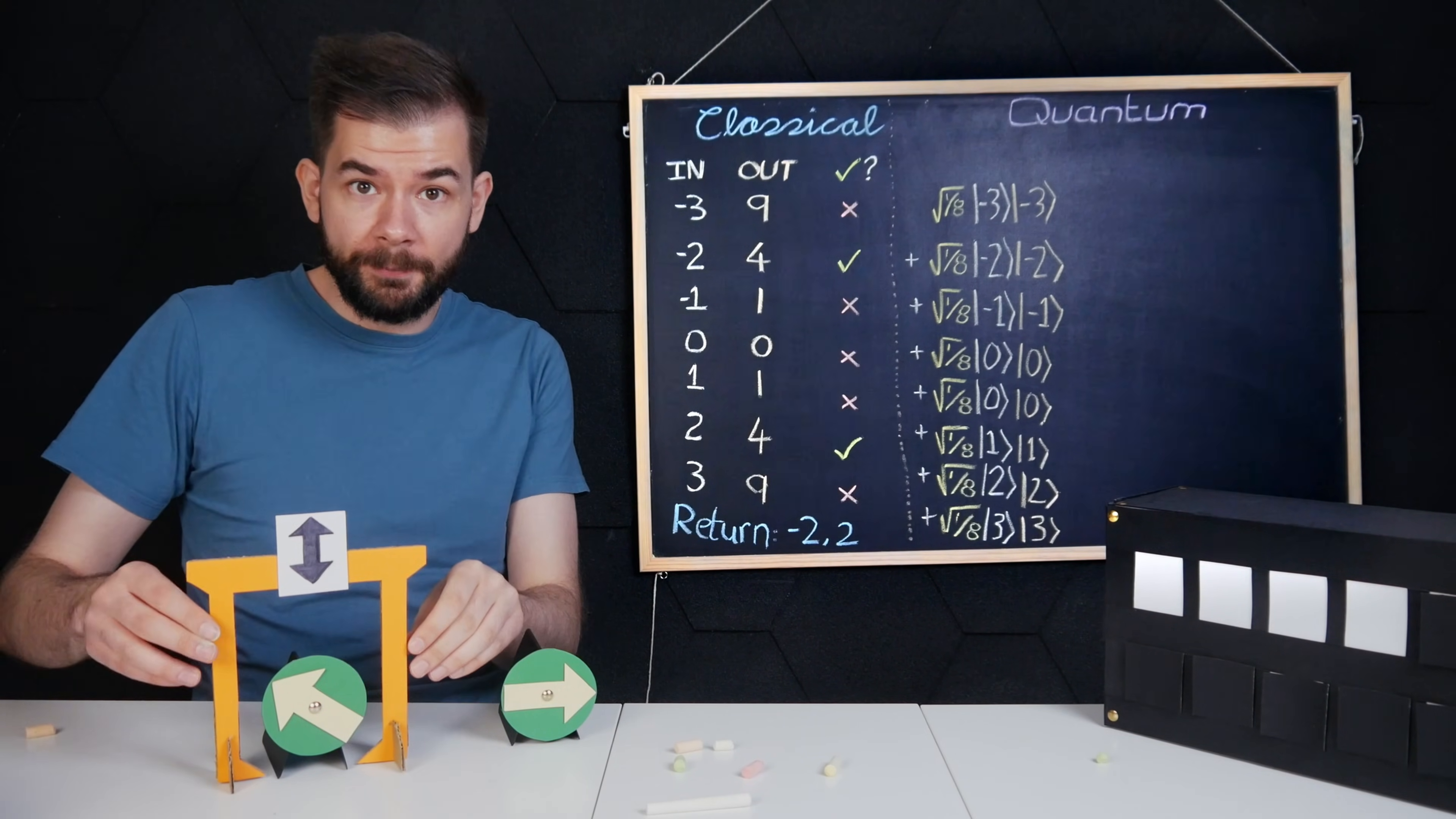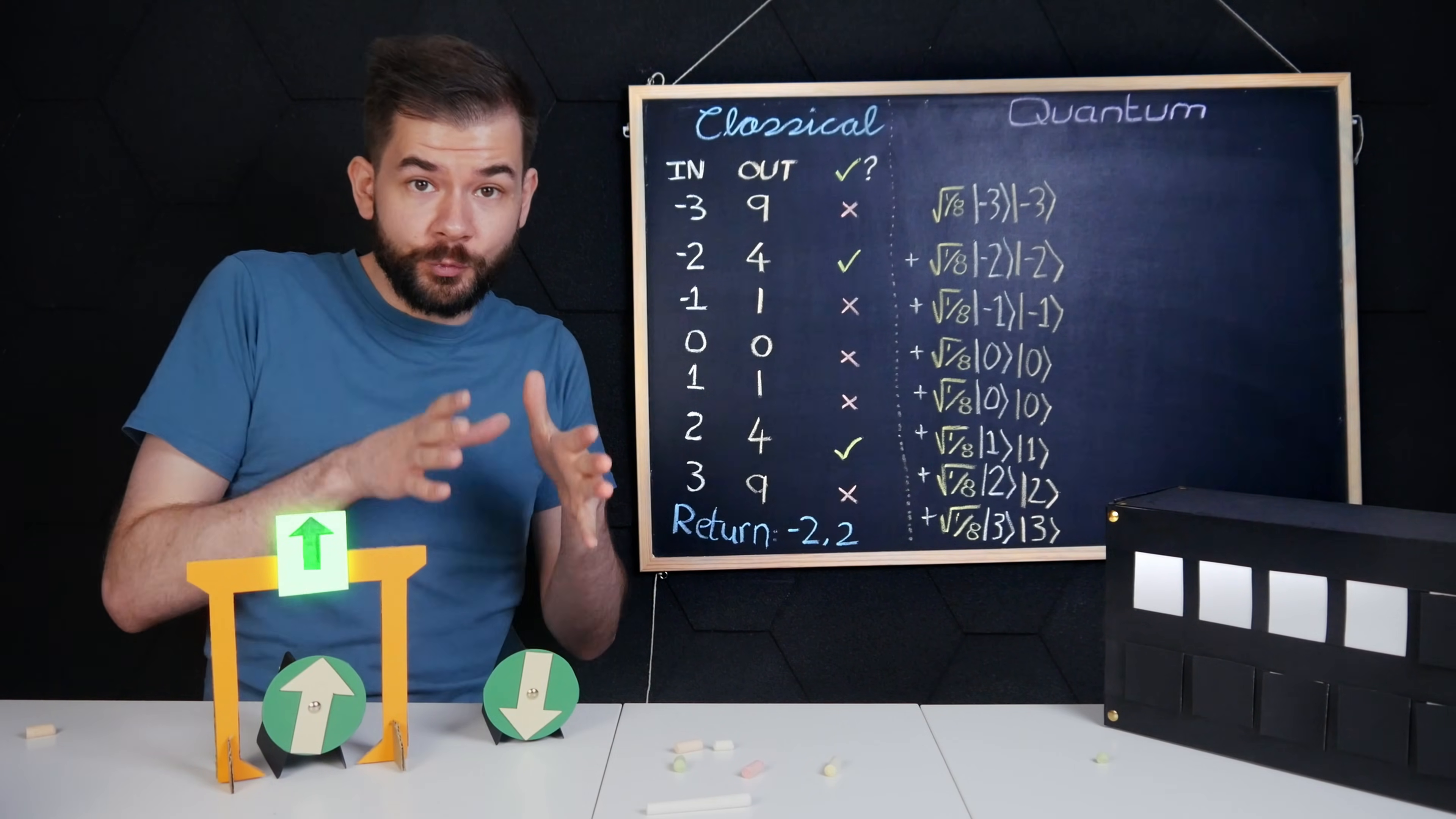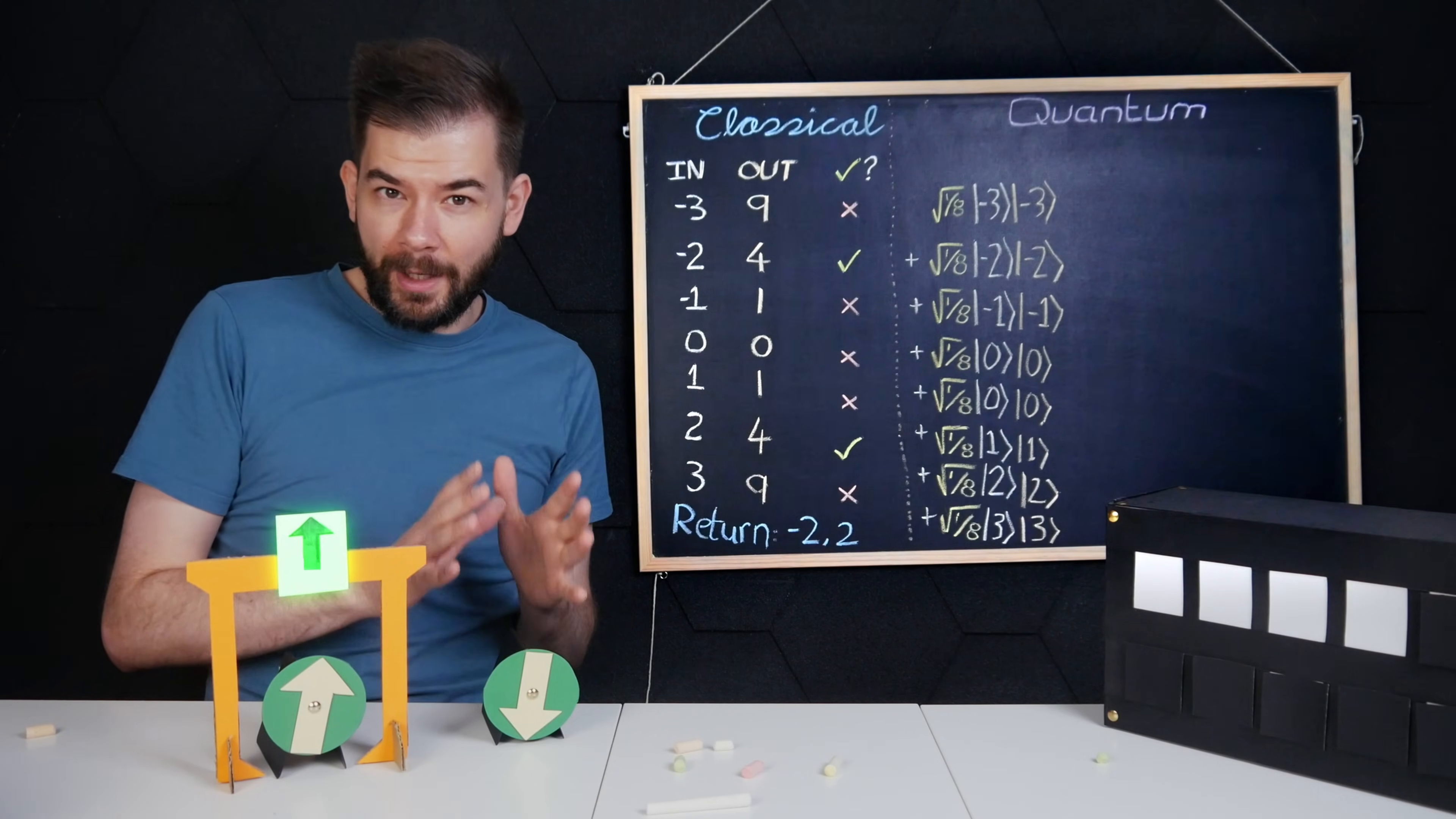But once one is measured and its spin is made certain, the others will be made certain, even without measuring. How do we exploit this property?